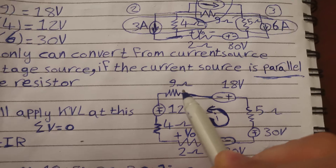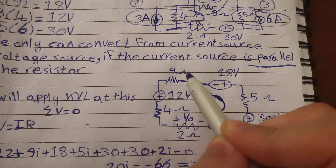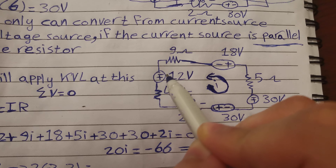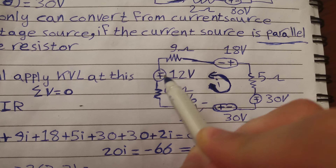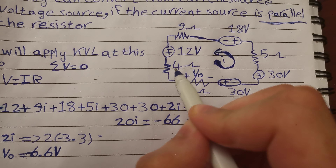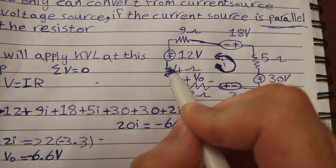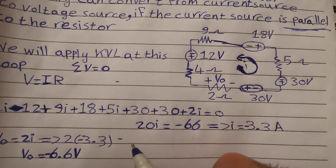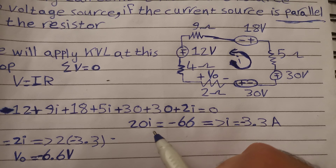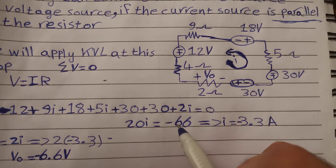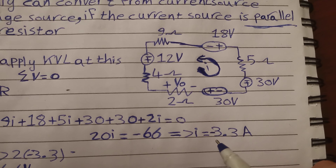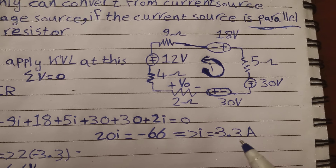Then we add 9i, since the current goes from positive to negative. Then minus 12, because the current goes from negative to positive. Then plus 4i, as the current goes from positive to negative. After simplification: 20i = −66, so i = −3.3 amperes.